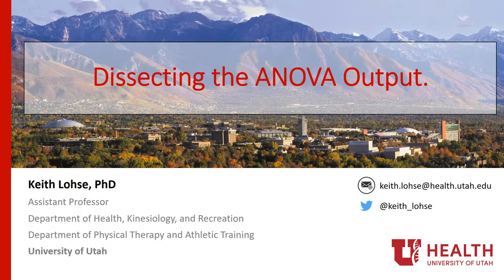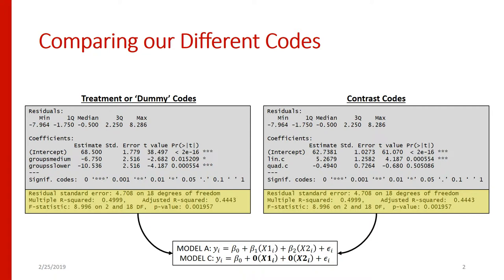The reason for that is that our models are converging on the same estimates but getting there in slightly different ways. Both models, whether treatment coded or contrast coded, are going to end up predicting the mean for each group, which means we'll get the same sums of squared errors and the same omnibus F test. In this video we want to walk through the equations step by step so you can see that the math actually works out.